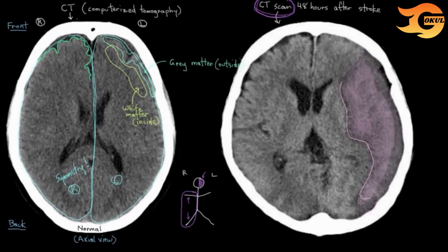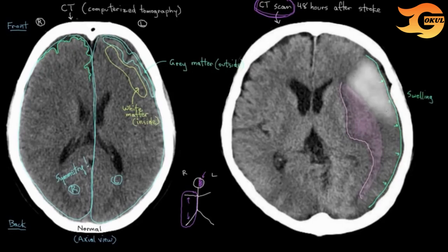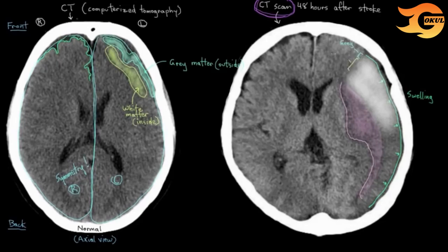A few other things to notice in our stroke brain: the nice, well-delineated curves of the surface of the brain are not really present anymore because of the swelling. The surface of the brain is starting to look pretty similar to what's underneath, in contrast to the normal side where there's good differentiation between gray matter on the outside and white matter underneath. In the brain with a stroke developing, you start to lose this gray-white differentiation — things start to look more the same — and that's another sign of stroke on a CT scan.